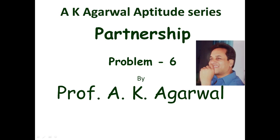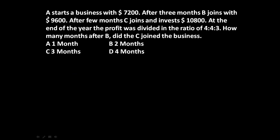Hello friends and welcome to AK Agrawal Aptitude Series. In this session we are going to learn a technique for solving a problem on partnership. The given problem is: A starts a business with $7200. After three months, B joins with $9600. After how many months does C join and invest $10800? At the end of the year, the profit was divided in the ratio 4:4:3.